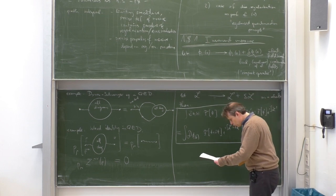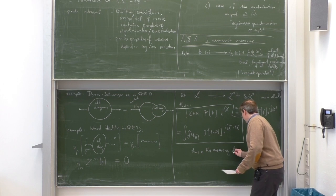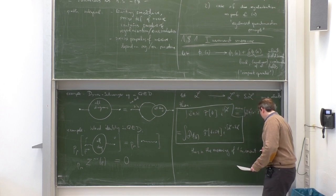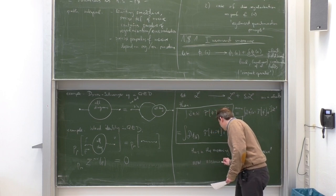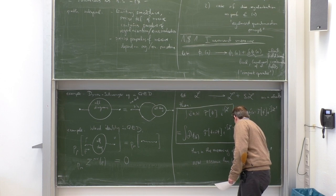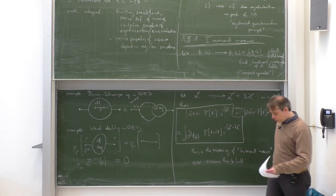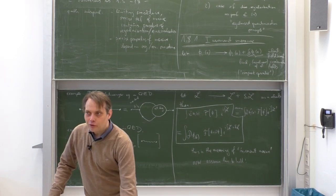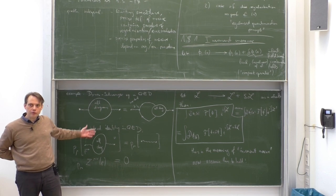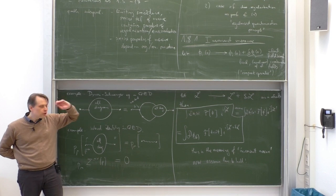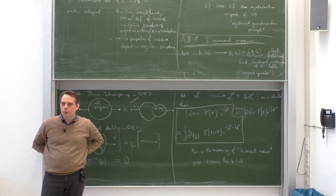Assuming the path integral measure is invariant — with all the relevant remarks now given — we can deduce all such identities. This relationship will also be proved in the context of dimensional regularization. We have motivated the discussion by providing two interesting all-order identities that follow easily from this assumption. The proof will be indicated in the afternoon exercise session and expanded next week.